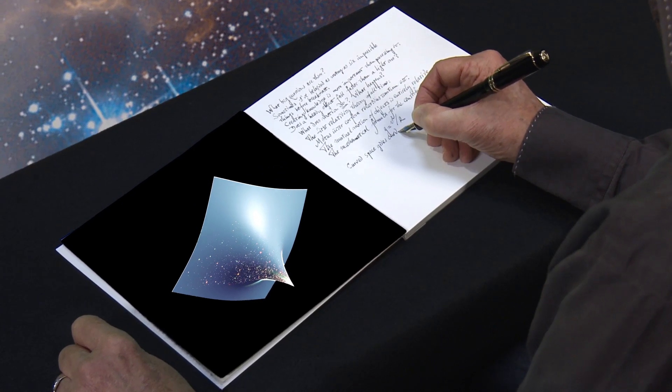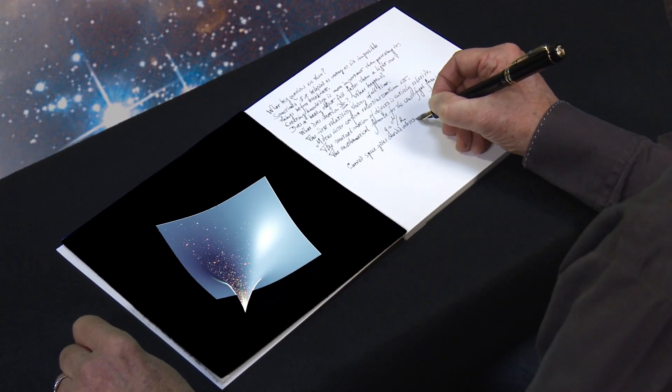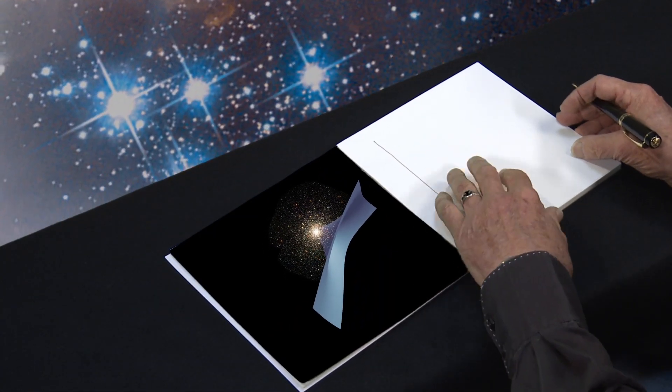Centuries later, Albert Einstein found the answer. Curved space gives curved orbits. Just do it yourself and you will find out.